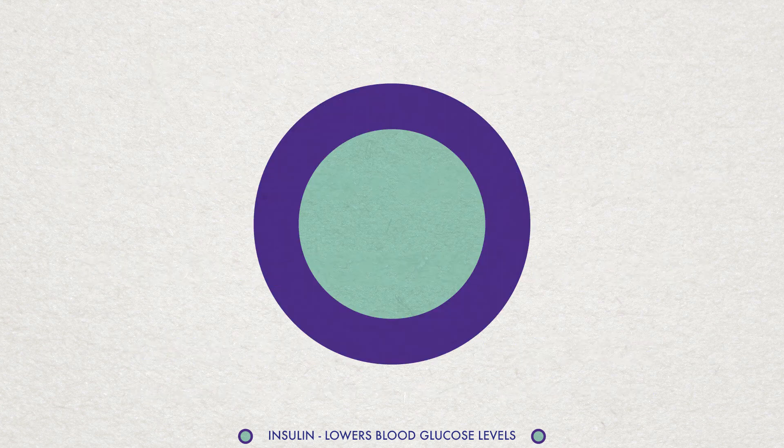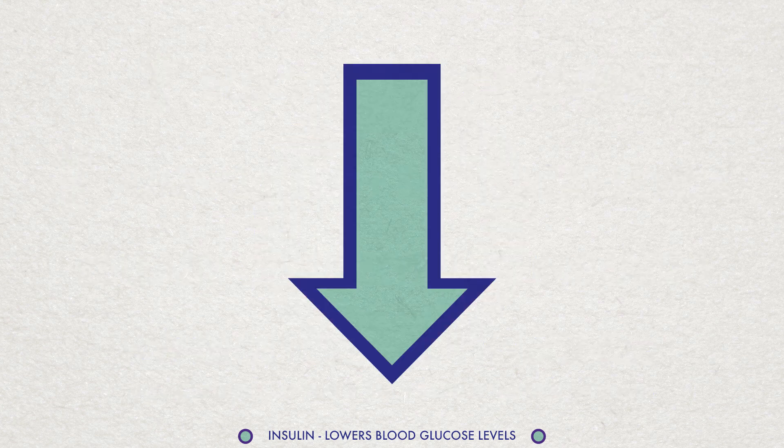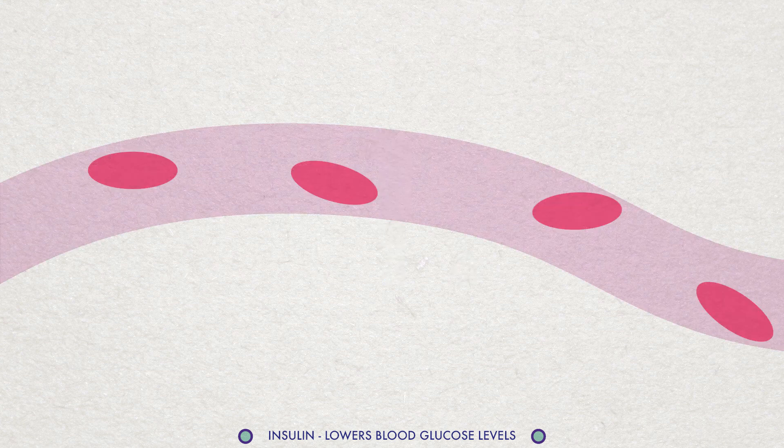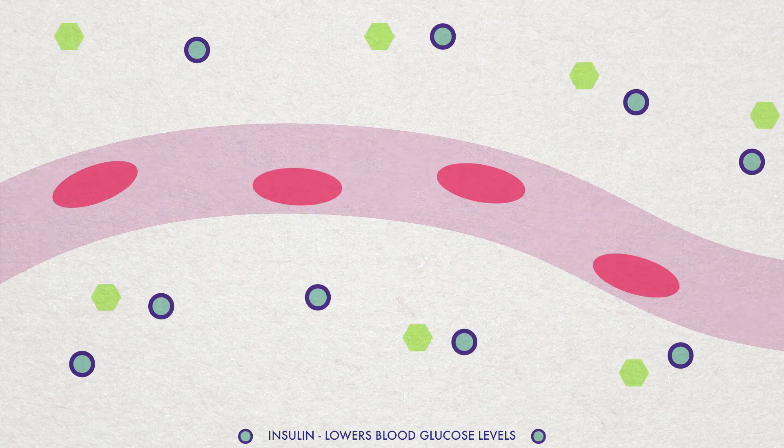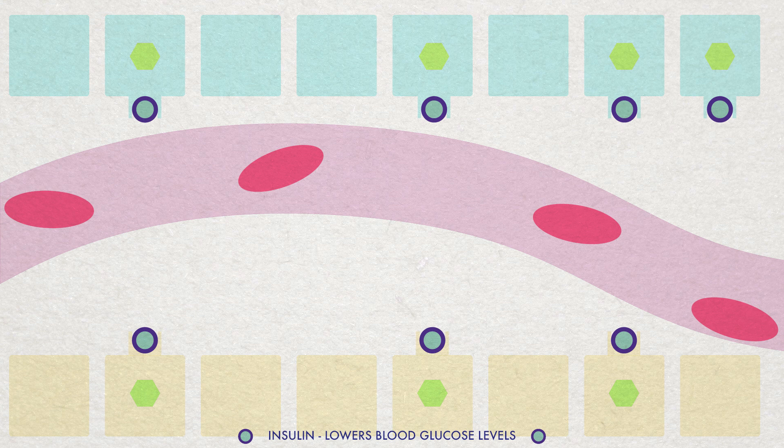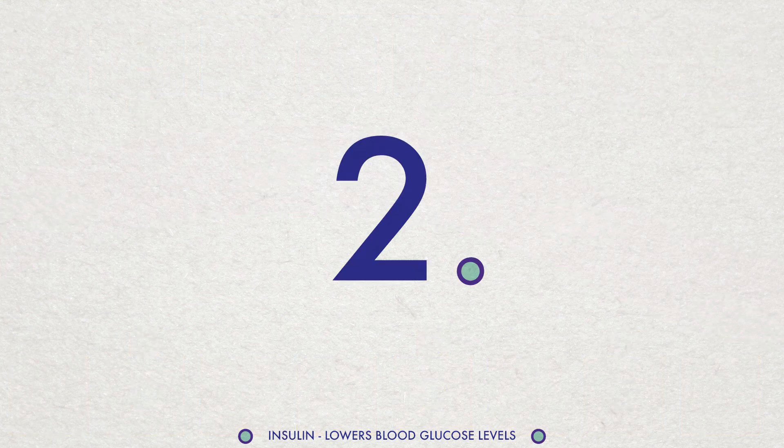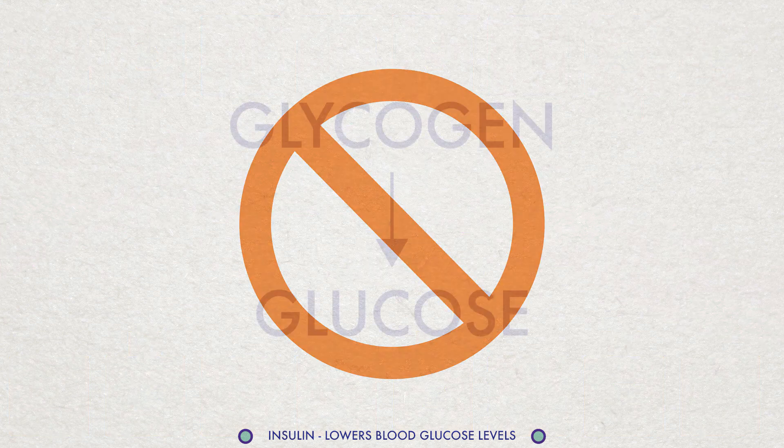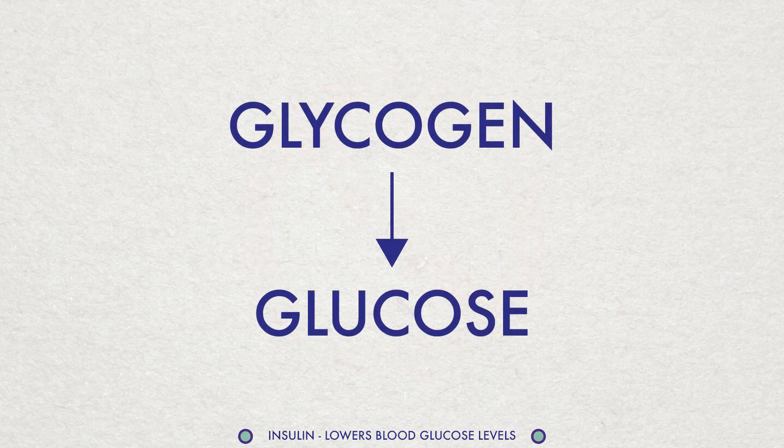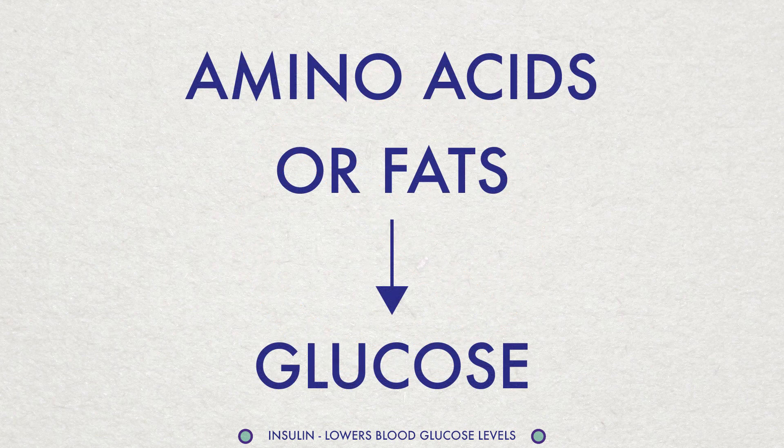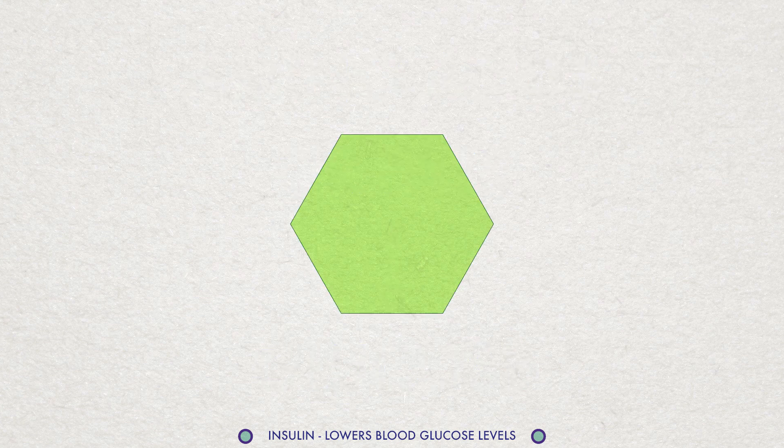Once it is triggered, insulin lowers blood glucose levels in three ways. First, it enhances the transport of glucose from the blood and into body cells, particularly into muscle and fat cells. Second, it inhibits the breakdown of glycogen into glucose. And finally, it inhibits the conversion of amino acids or fats into glucose.